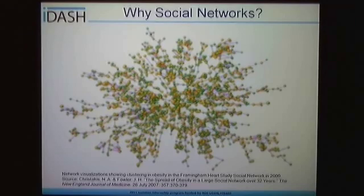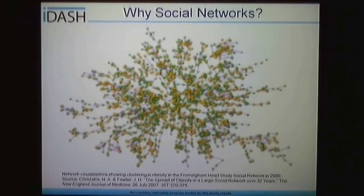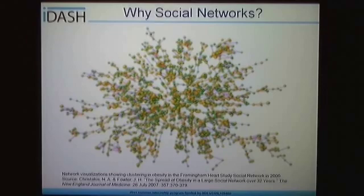The yellow nodes indicate individuals who have been classified as obese. Dr. Fowler has done research showing that obesity affects up to three degrees throughout the graph — meaning that if an individual is classified as obese, it is more likely that their friends are obese, also their friends' friends, and even their friends' friends' friends, three degrees out into the graph. An individual's characteristics have a strong effect on their social network, and conversely, the social network also has a strong effect on the individual.